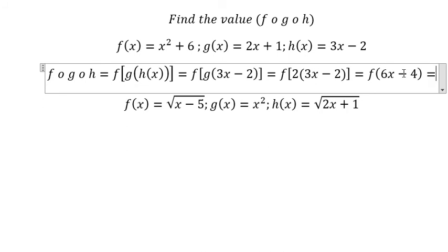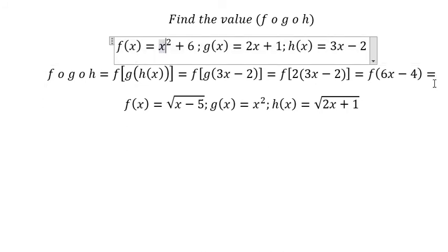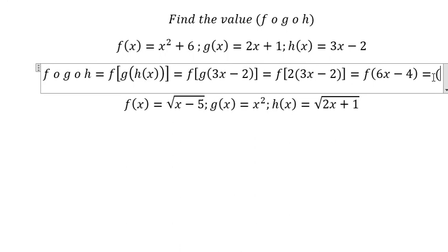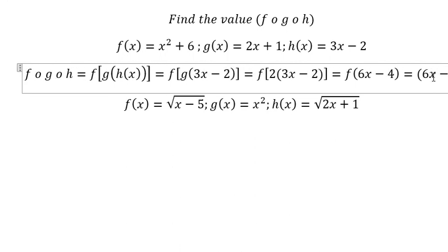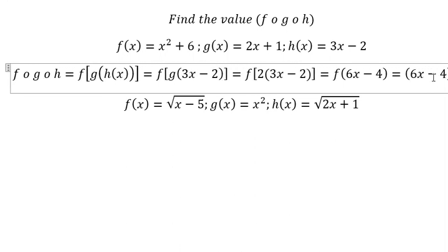So we put 6x minus 4 into x, and that should be (6x minus 4) to the power of 2 plus 6.